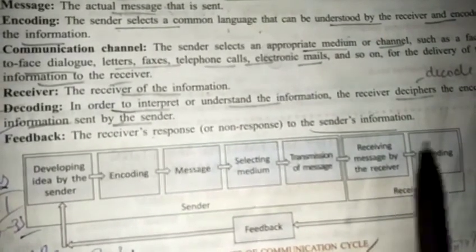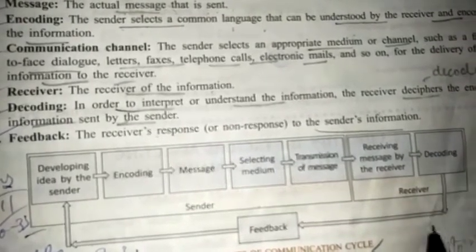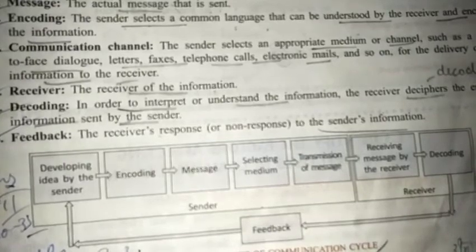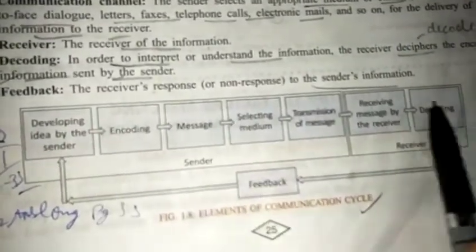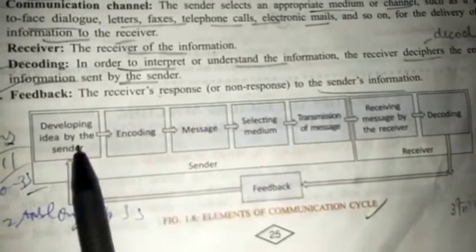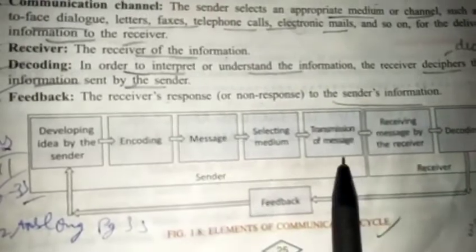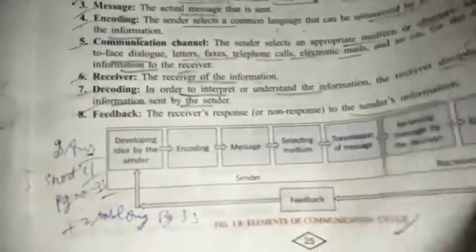The message is then received and decoded by the receiver. After reading the message, the receiver sends feedback back to the sender. This is a continuous process — it starts again from the beginning — which is why it is known as a communication cycle. This concludes what the communication cycle is.